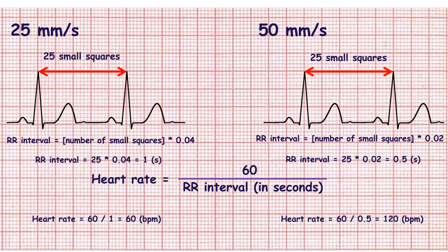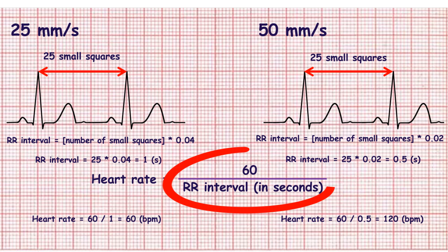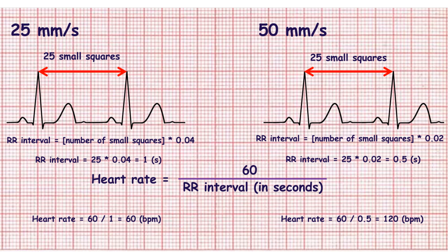Count the number of small squares and multiply it by 0.04 if ECG speed is 25 millimeters per second, or multiply it by 0.02 if ECG speed is 50 millimeters per second. Then divide 60 by the RR interval measured in seconds.